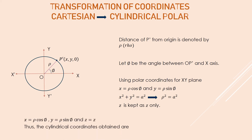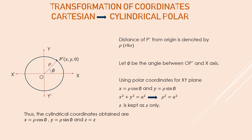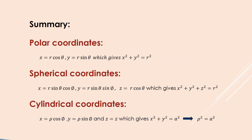Thus, the cylindrical coordinate system is represented as x = rho·cos(phi), y = rho·sin(phi), and z = z. To summarize: polar coordinates are x = r·cos(phi), y = r·sin(phi); spherical polar coordinates are x = r·sin(theta)·cos(phi), y = r·sin(theta)·sin(phi), z = r·cos(theta); and cylindrical coordinates are x = rho·cos(phi), y = rho·sin(phi), z = z.